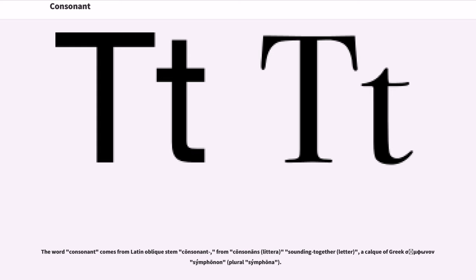The word consonant comes from Latin oblique stem consonant, from consonans litera, meaning 'sounding together letter', a calque of Greek symphonon, plural symphona.